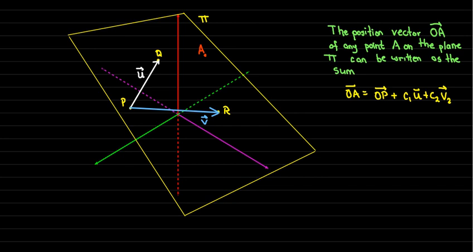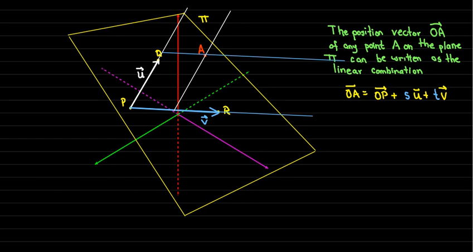We saw this in a previous video when we were working in R2, and the same construction is going to work. We draw lines through our two parallel vectors, then cut and paste those lines so they pass through point A. Now I have a parallelogram. If I had the actual coordinates, I could calculate the exact coefficients S and T. But here I'll just estimate — the white line is about 1.2 times the length of vector U, and the blue line is about half the length of vector V.